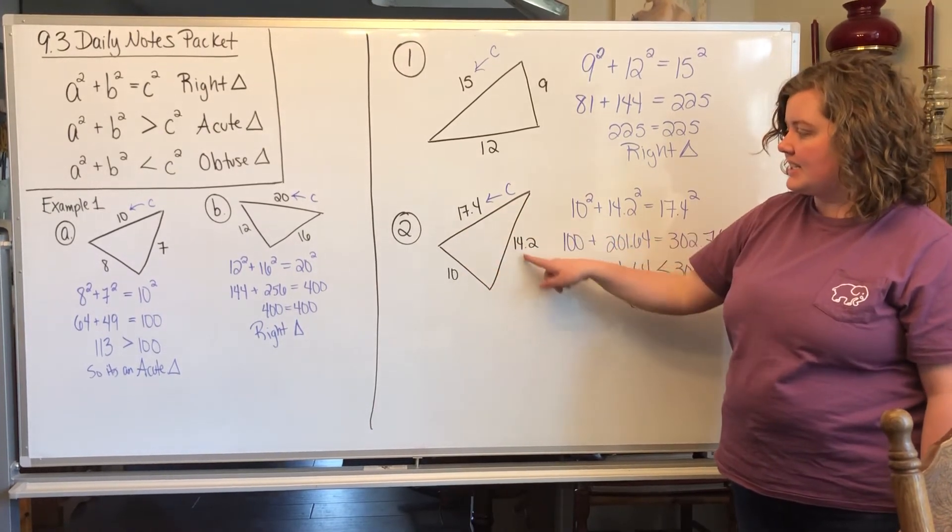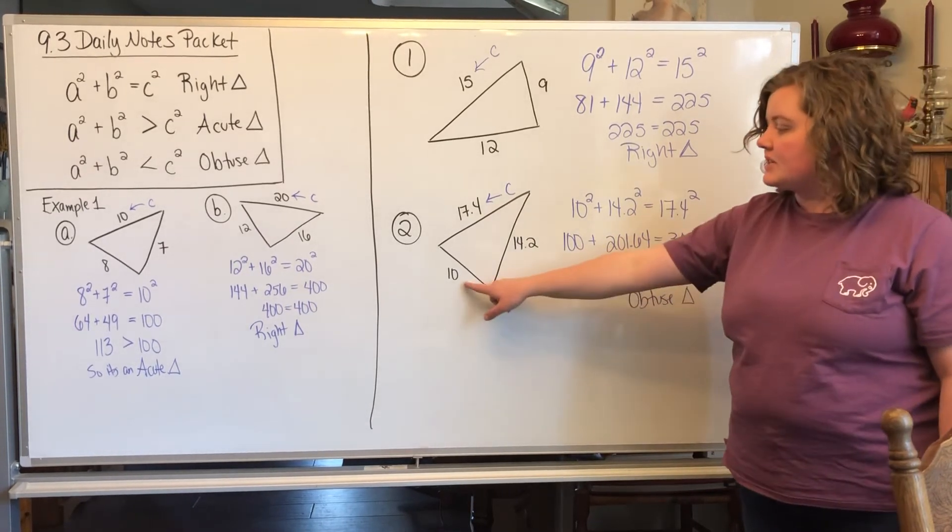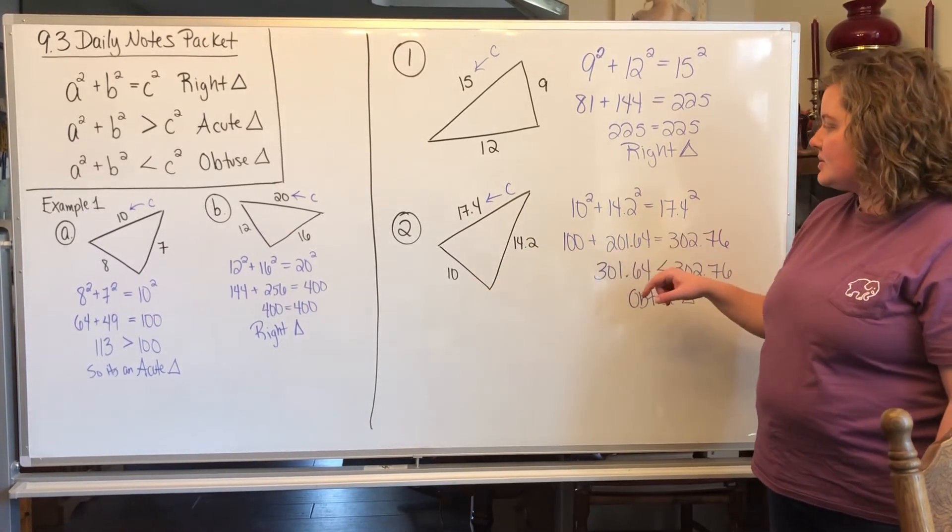If you look at number 2, the biggest side is 17.4, so that's going to be our c. So we're going to do 10² and 14.2² together.